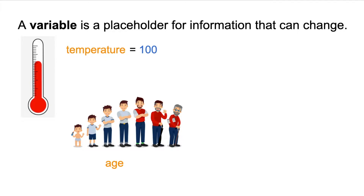Age is also a variable. Today I might be 9 years old, but I'm going to get older and in a few years I'll be 16 years old. And a few years after that I'll be 54 years old. I'm not always the exact same age every moment of my life — it's always changing. Age is a variable because it changes all the time.